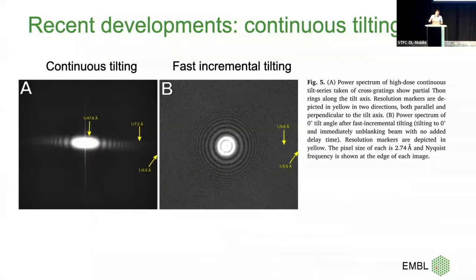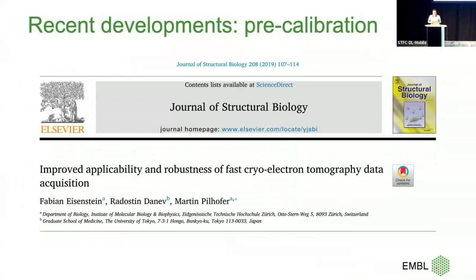They also checked fast incremental tilting: tilt, stop, start a video stream, and stepwise go through the tilts — still quite an improvement, but without real tracking, just relying on the stage being very good. Then Fabian Eisenstein said we can measure shifts up front for a stepwise system and bring the shifts back in — basically the same idea Bram Koster did in 2002, which already improved things.